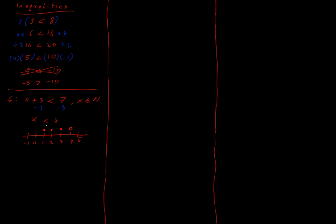Why does the group stop there? Because 0 is less than 4, but I have the restriction that x is an element of ℕ. This is an extremely important idea for our exams — where they give us a restriction at the beginning that becomes important later on. x must be a natural number, so we stop our set at plus 1, because that's the smallest natural number. So the set g contains elements 1, 2, and 3, with no fractions or numbers in between.